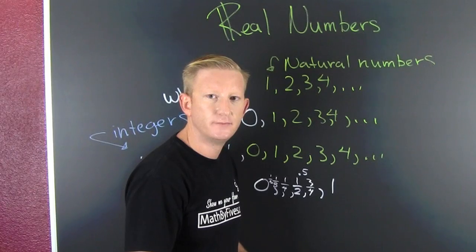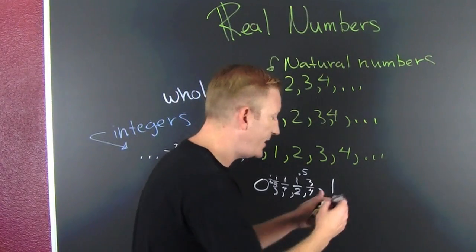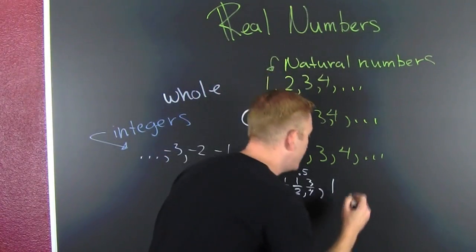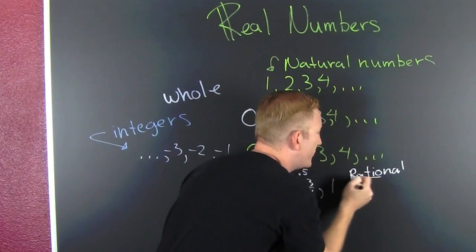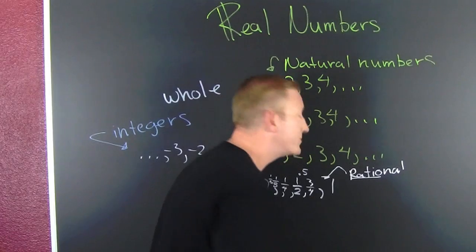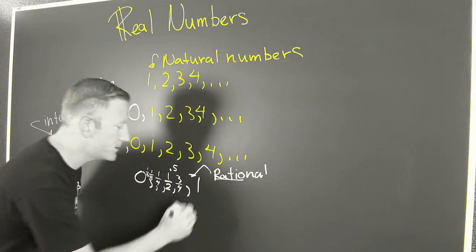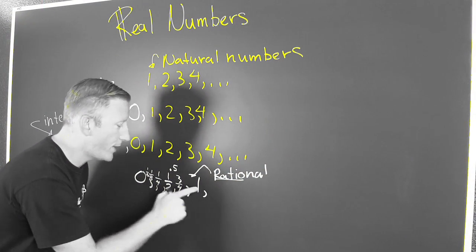Any number that can be represented as a ratio, a fraction, is a rational number. R-A-T-I-O-N-A-L - ratio is right in there. Wham! Those are the rational numbers. But they expand upon beyond zero and one.